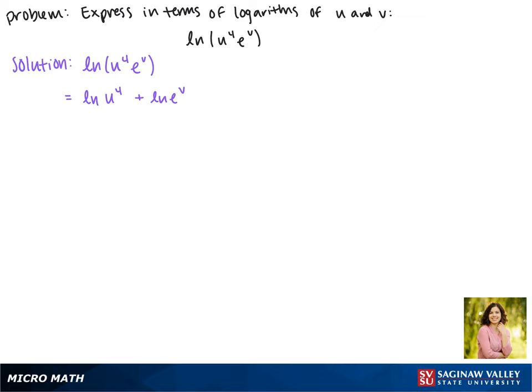Now we can write exponents out front as being multiplied by the logarithm. So this becomes 4 times the natural log of u plus v times the natural log of e.